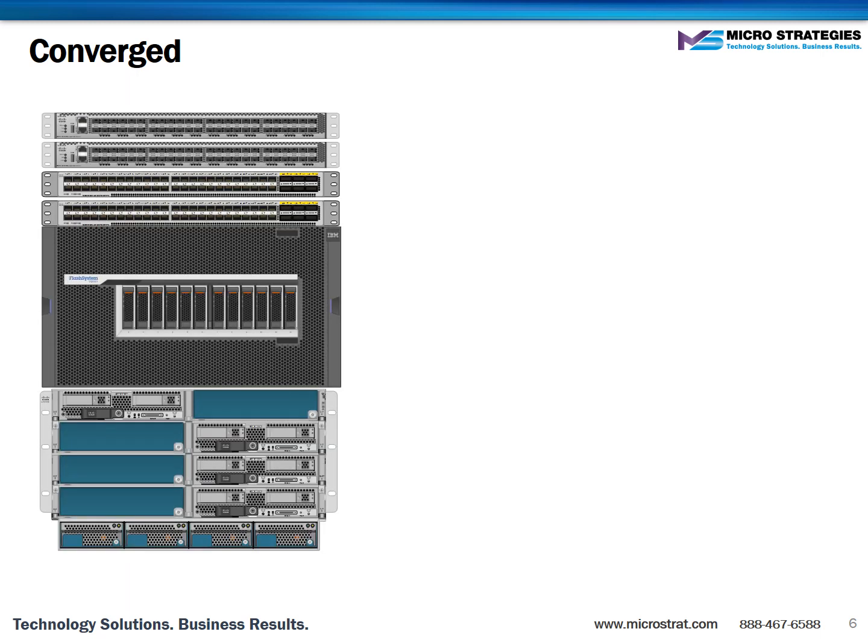In a converged infrastructure, the compute, storage, and networking is all controlled via a single management interface. Just because the tiers have been brought together, this does not mean that all components need to be from a single vendor. A good example of this is Cisco's approach to converged. As Cisco does not have its own storage practice, they partner with others to deliver pre-validated and centrally managed systems. Offerings like vBlock using EMC, VersaStack using IBM, or FlexPod using NetApp storage are good examples of this.